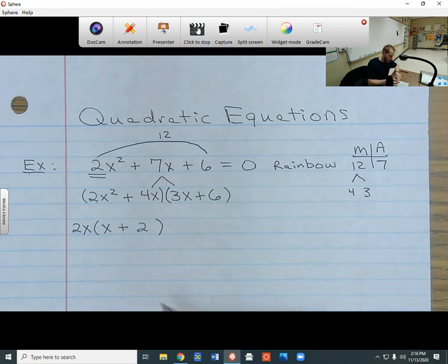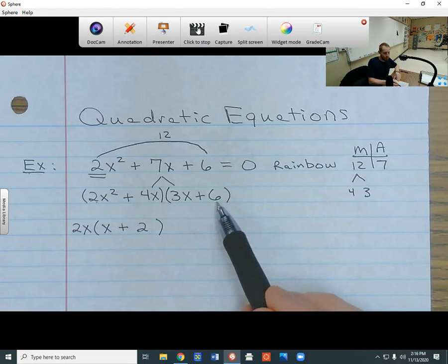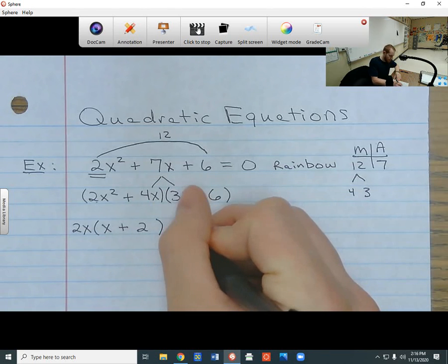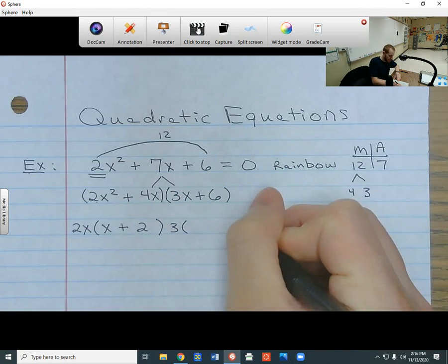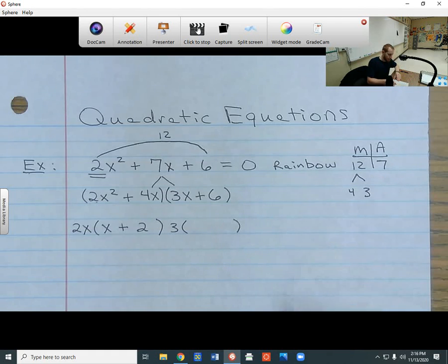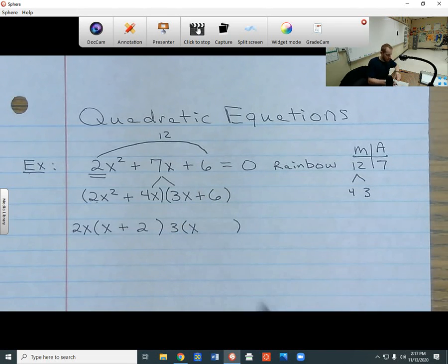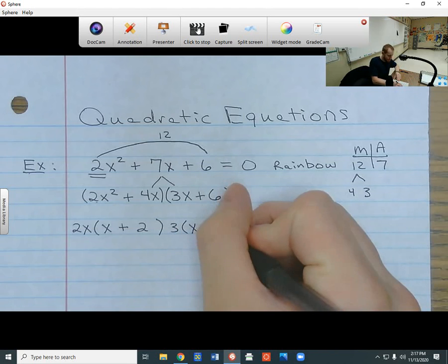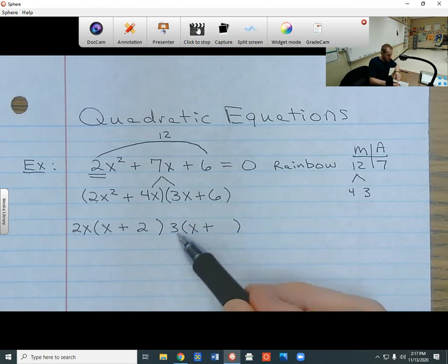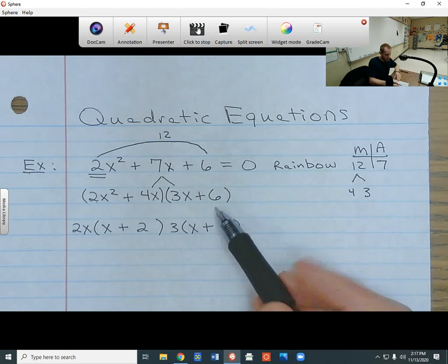Now I look at the second group, the 3x plus 6. What do these two terms have in common? Well, they can both be divided by 3. So I can take out a 3 from both of those, and I'm going to be left with something on the inside. So since I took out the 3, I only have the x left, so I leave that on the inside. The plus is going to come down. And since I took out the 3, I have to figure out what I need to multiply the 3 by to get to the 6. And I need to multiply by 2.